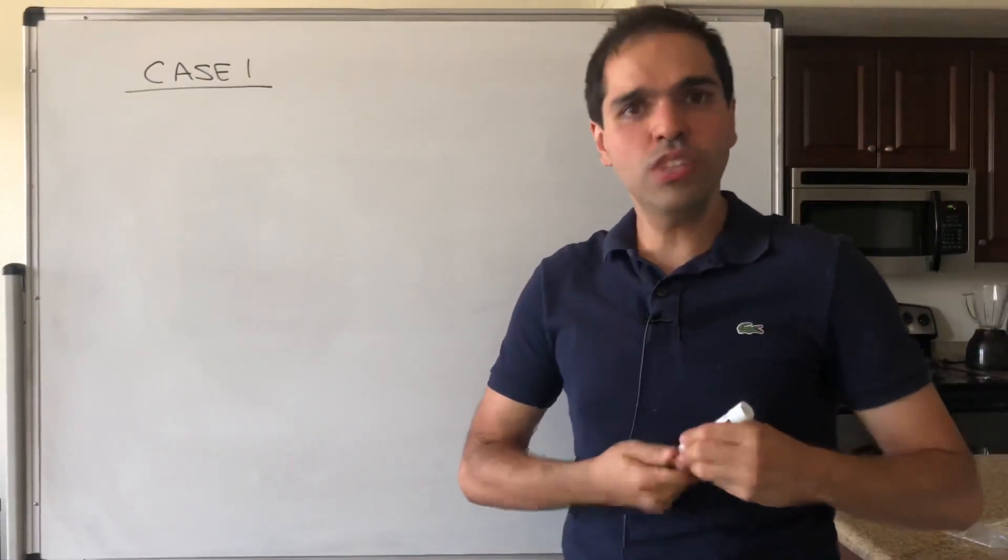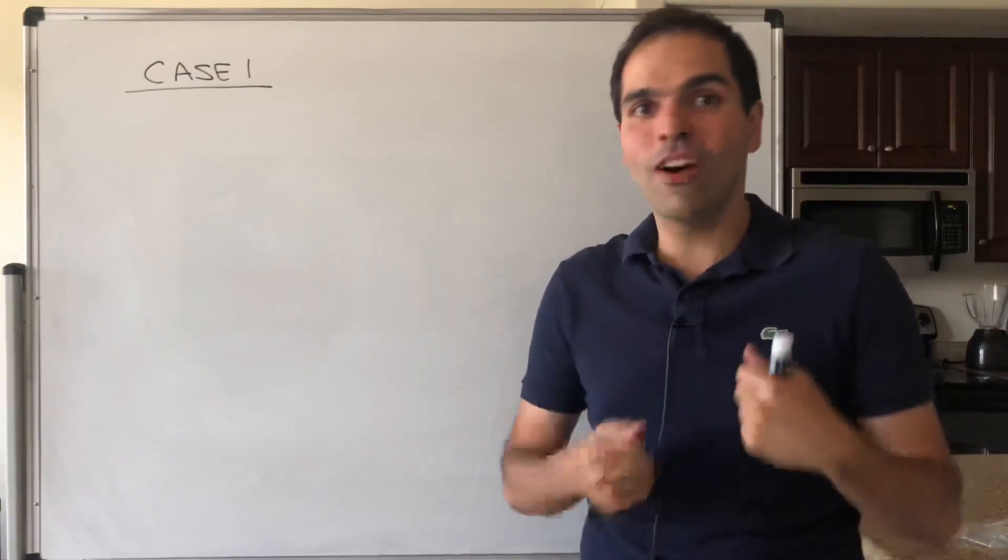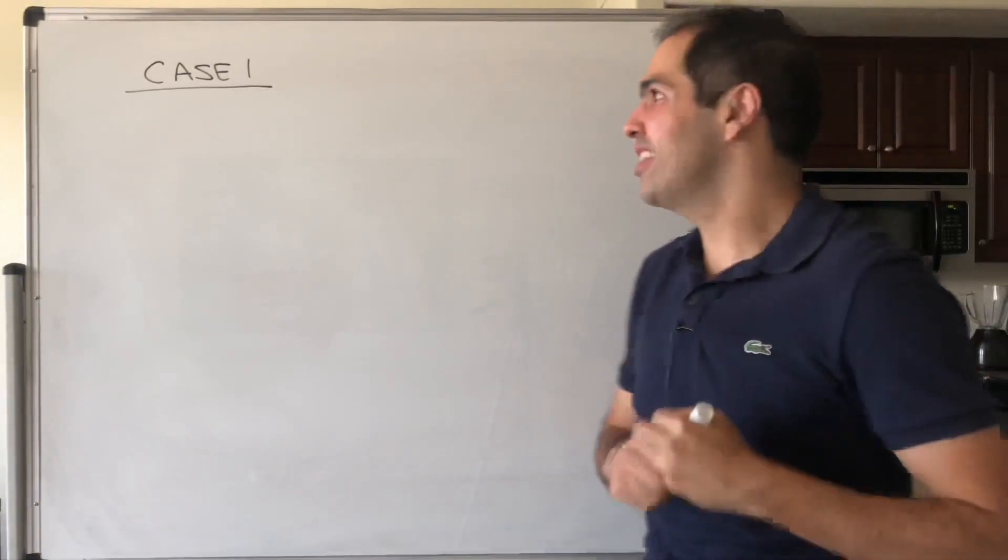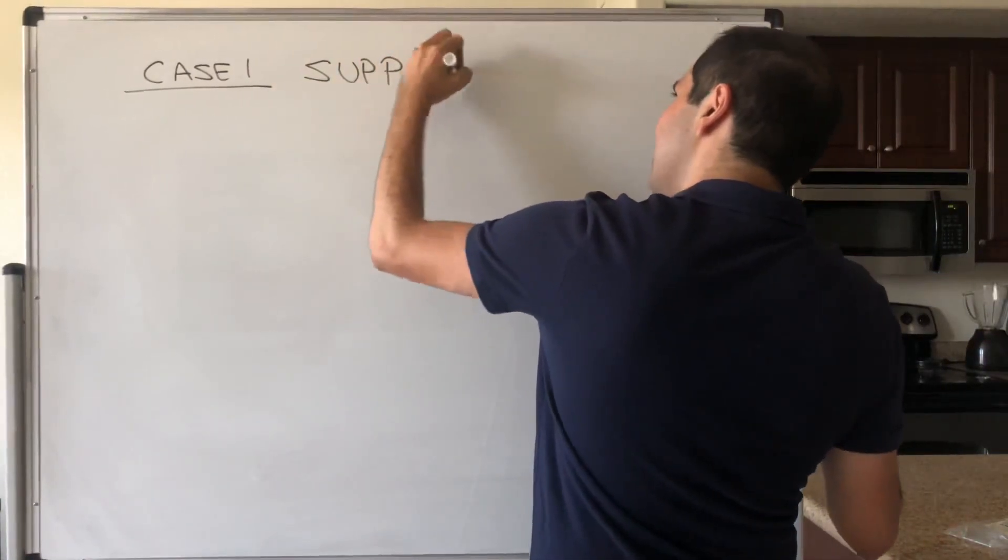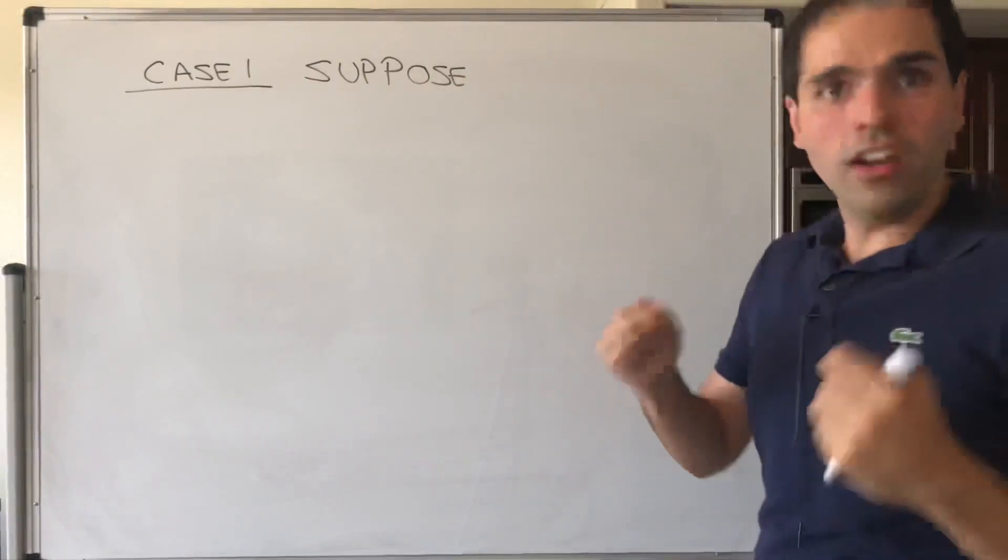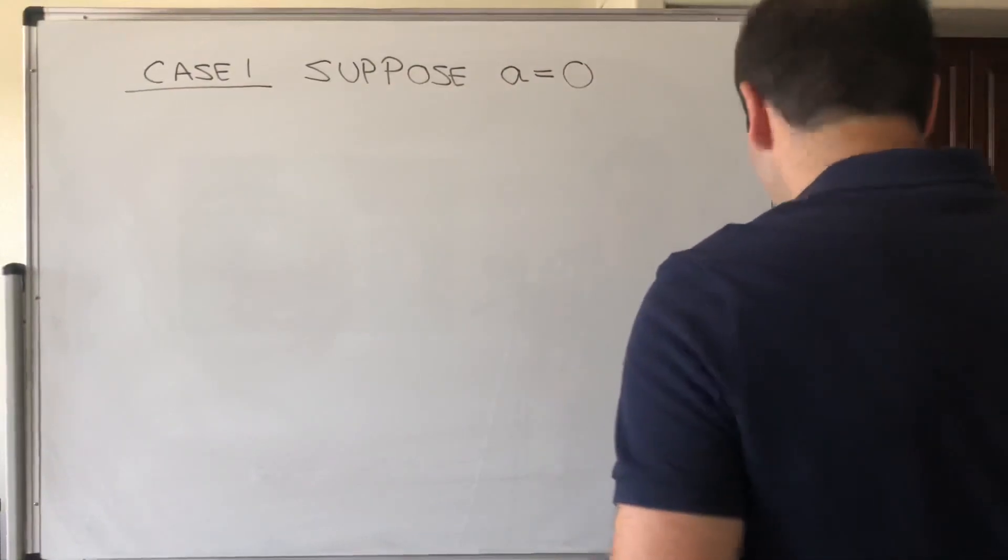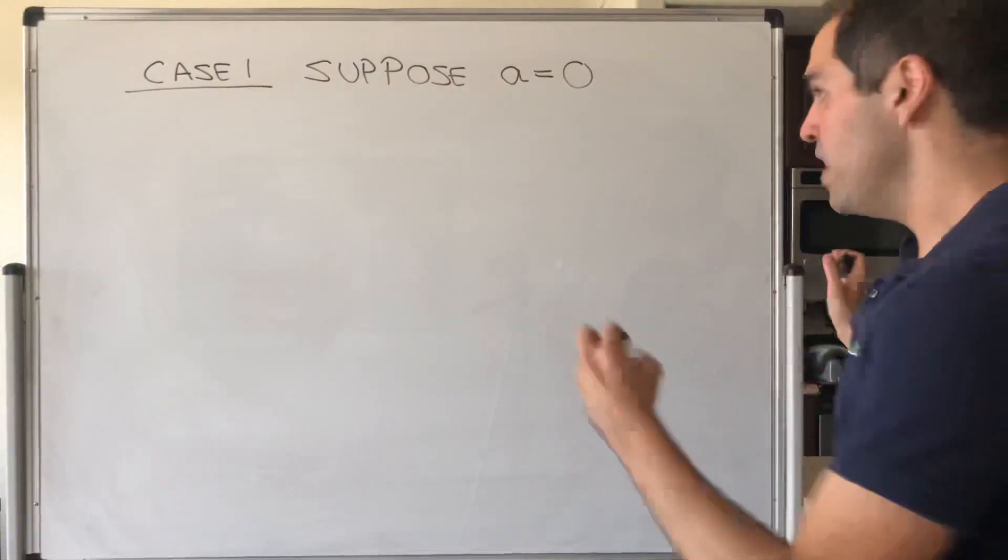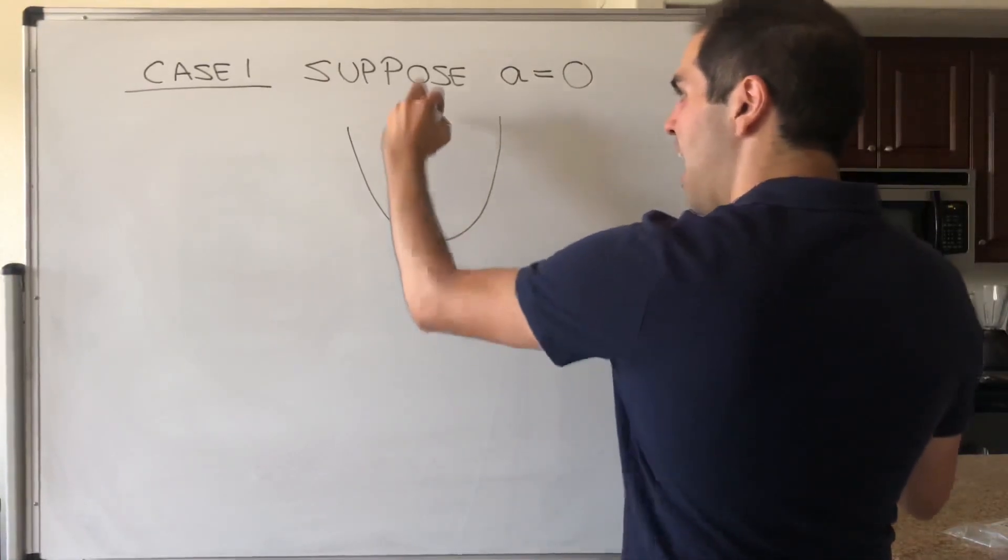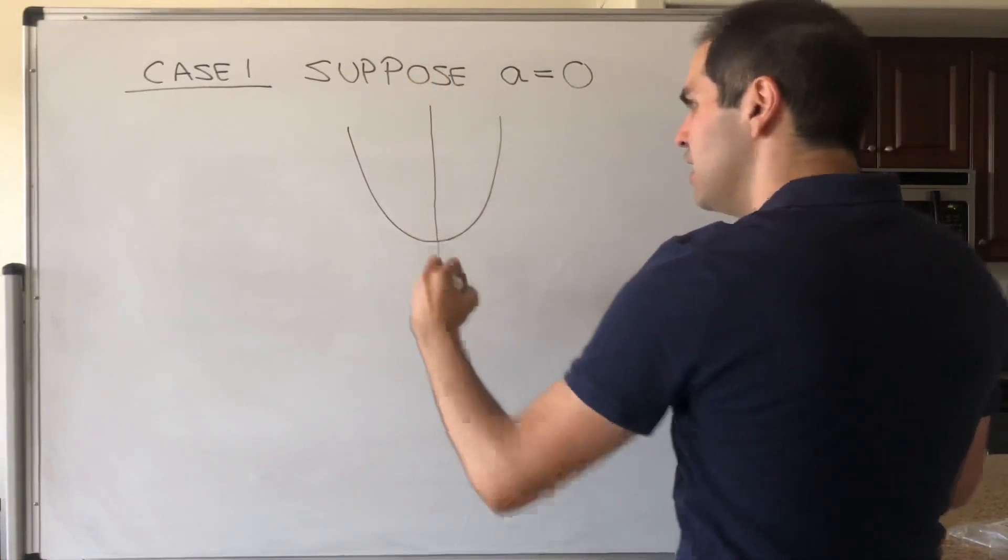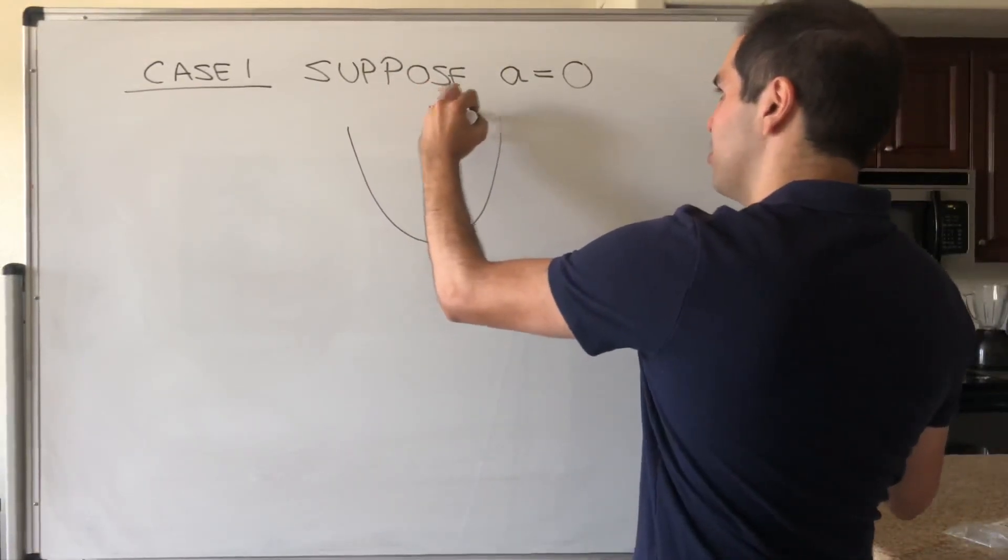And here what we need to do, we need to argue in terms of cases because it actually depends if one of the points is zero or not. So case one, suppose, without loss of generality, that one of the intercepts is zero. So a equals zero. What does that mean in terms of the picture? Well, if a equals zero, then actually it means that one of the normal lines has to be the vertical line, so x equals zero.